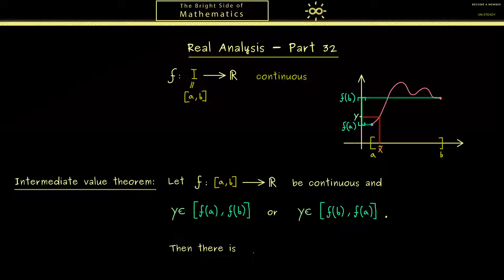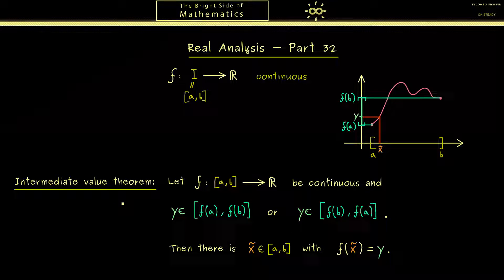Then the intermediate value theorem tells us there is a corresponding x we call x tilde. It's an element of the interval [a,b] and it is sent to y by f. So f(x tilde) equals y. This is the intermediate value theorem we'll prove today.